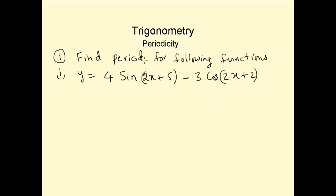Find the period for the following functions: y = 4sin(2x+5) - 3cos(2x+2). The 4 is the amplitude and 5 is the phase; similarly, -3 is the amplitude and 2 is the phase. We don't care about the amplitude and the phase — we just take sin(2x) and cos(2x). The period for sin(2x+5) is the same as sin(2x).